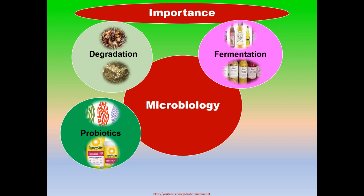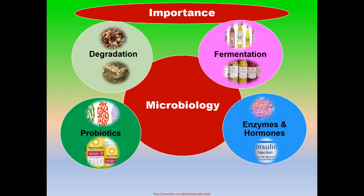Several types of extracellular enzymes such as amylase, protease, and lipase are produced by microorganisms and used in different industries including food and pharmaceutical industries. In addition, human hormones such as insulin — which is very essential for diabetic patients — can be easily produced from genetically engineered microbes. In this way, many more important roles are played by microorganisms.